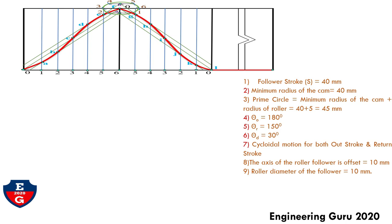The prime circle radius equals minimum radius of cam plus radius of rolling follower, that is 40 plus 5 equals 45 mm. Theta-O equals 180 degrees, theta-R equals 150 degrees, theta-D equals 30 degrees. Cycloidal motion for both outstroke and return stroke. The axis of the rolling follower is offset equal to 10 mm and rolling diameter of the follower equals 10 mm are given.